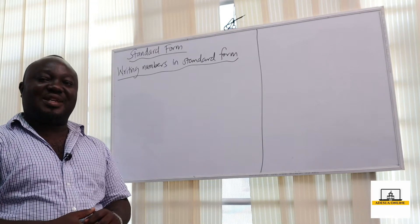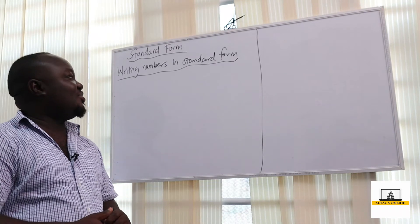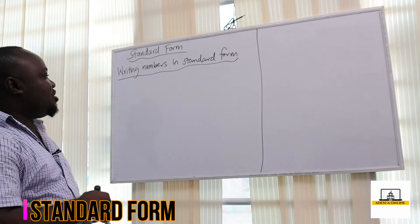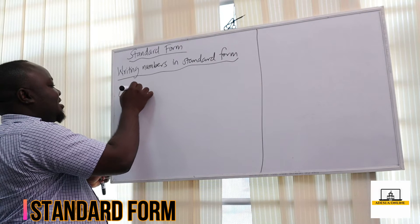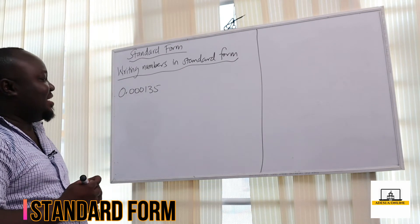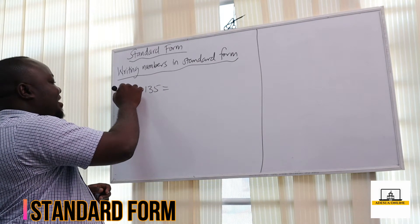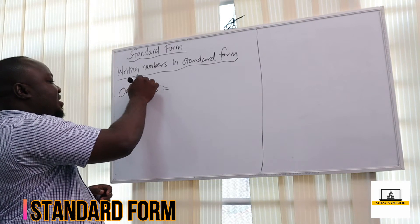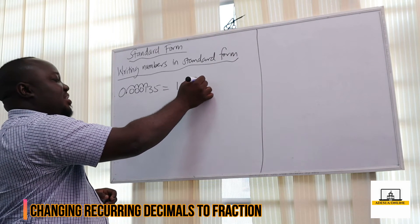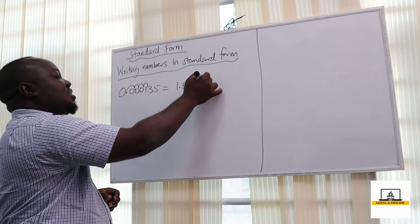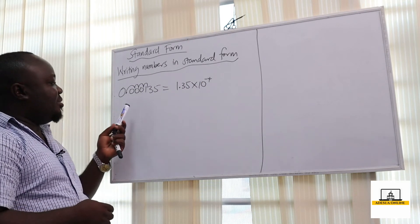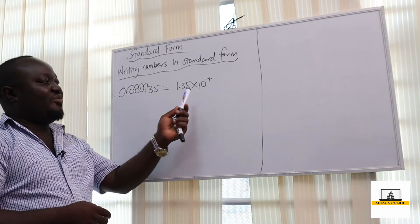Our next topic is standard form, and we are going to learn how to convert numbers in standard form. Assuming I have a number like 0.000135 and I want to write this in standard form — I move my decimal point 1, 2, 3, 4 — so we have 1.35 times 10 raised to the power negative 4.